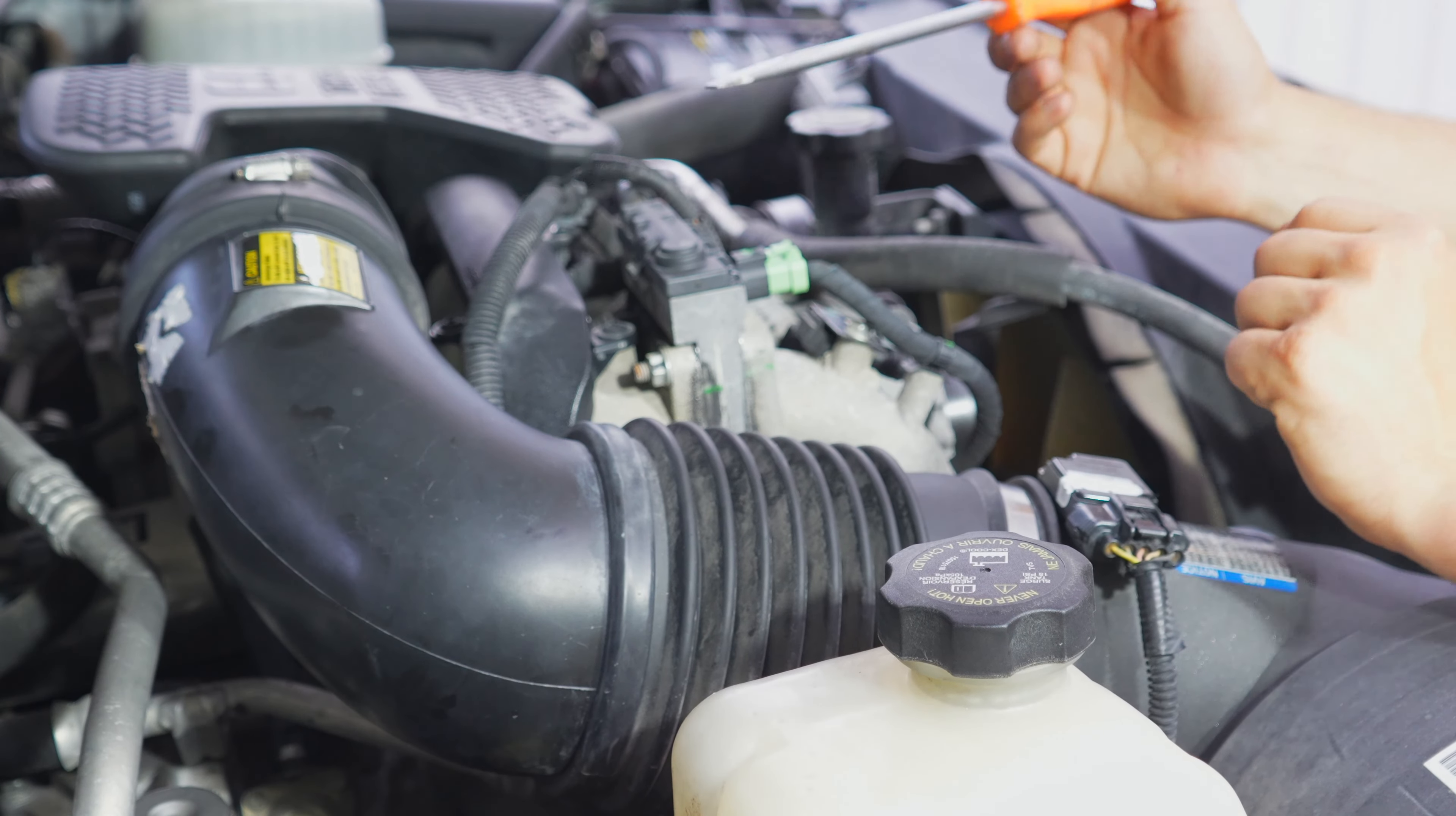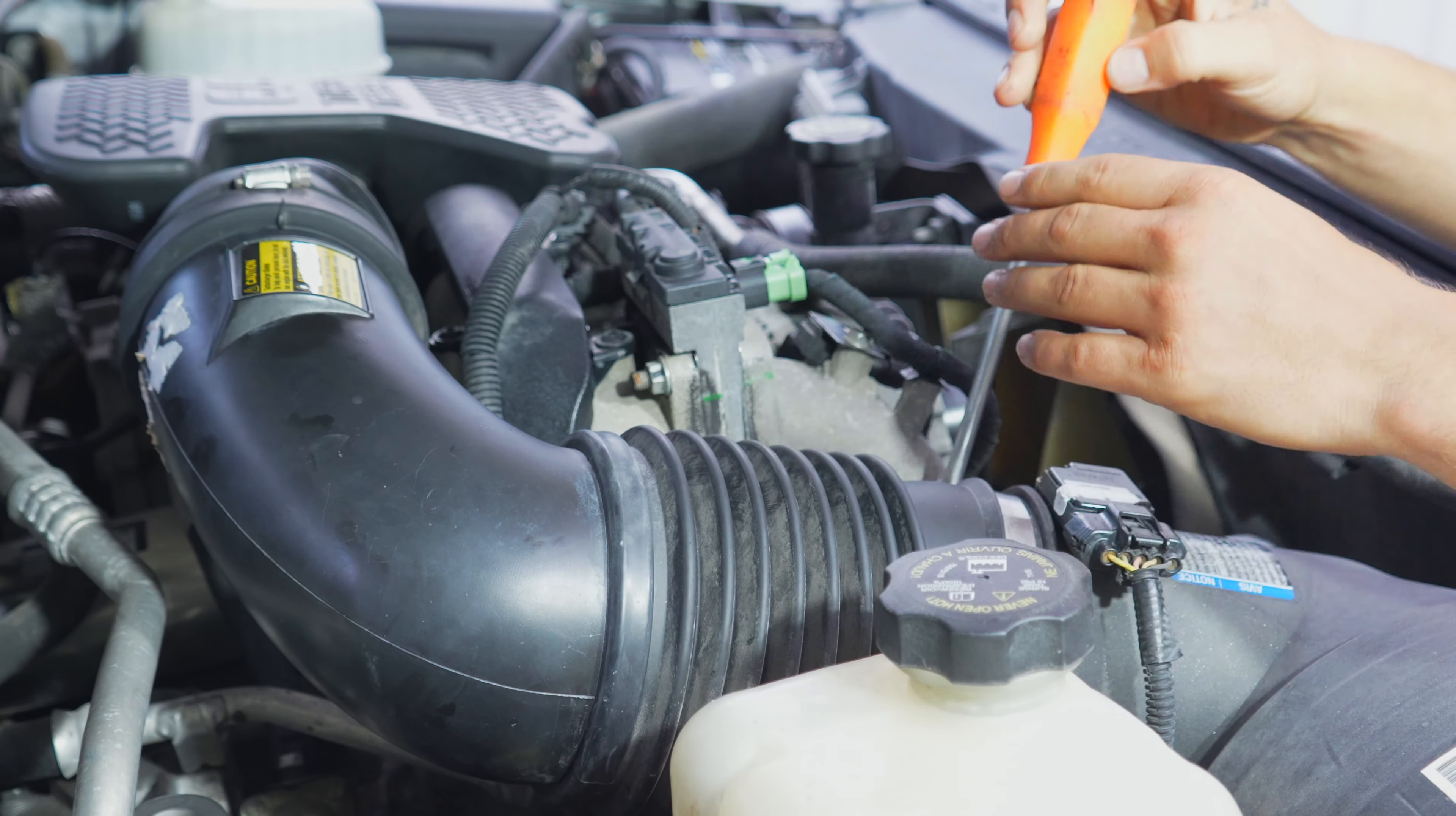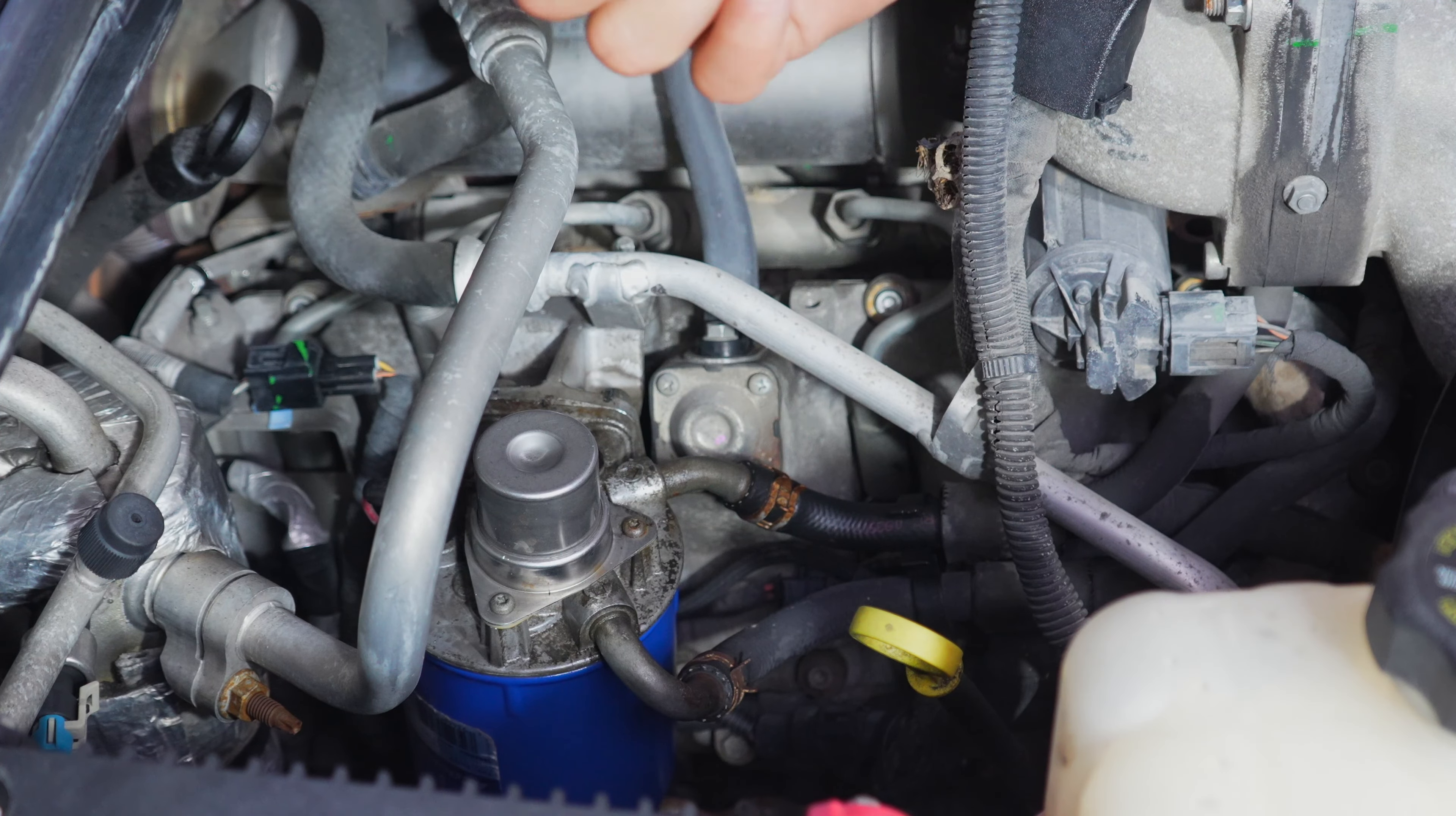All right, so to get a little better access to the fuel filter housing, I'm going to remove this intake air elbow. It's just two screw clamps, so I'll use a flathead screwdriver to loosen these up. When you look in here, first thing that you can notice is that the top of this filter housing is wet.